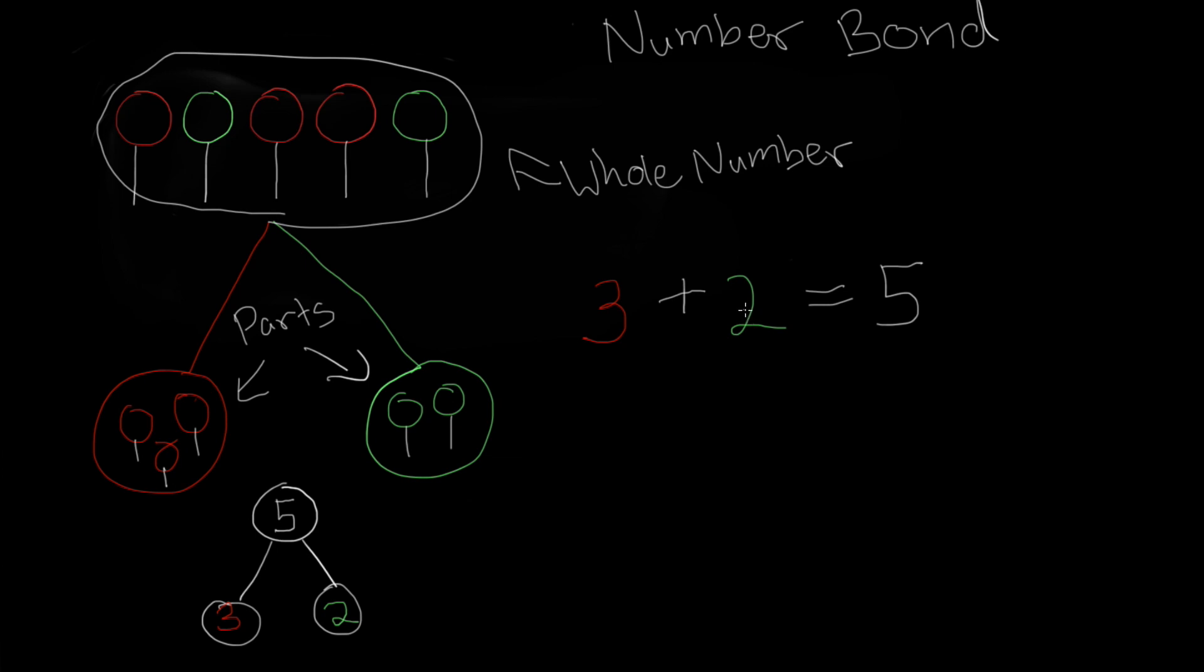We can also use a number bond to help understand subtraction. In subtraction, we start with the whole number and take away a part. Let's say that you started with five lollipops, but you gave two away to your friend.